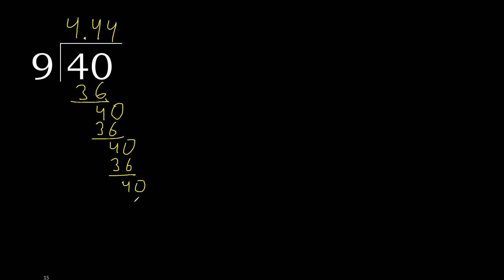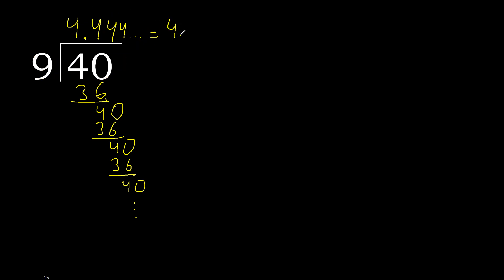Here it repeats, therefore repeat — repeat, repeat. Therefore fold, repeat, repeat. Finish it. 40 divided by 9 is here. After the point, fold, repeat. Therefore, like this: repeat, equal.